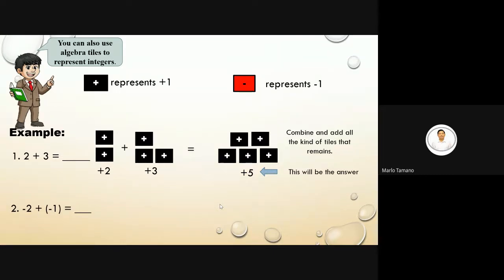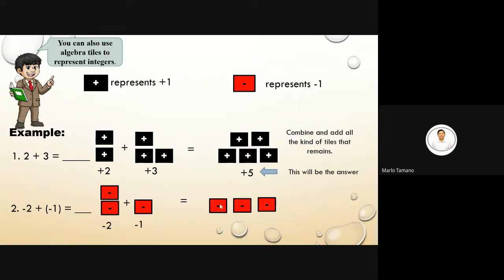Number two: negative two plus negative one. We have two negative one tiles plus one negative one tile. The answer is three pieces of negative one tiles. Whatever the sign of the tile will be, that is the sign of the final answer.